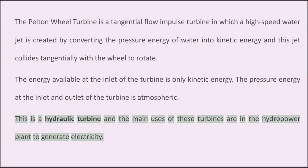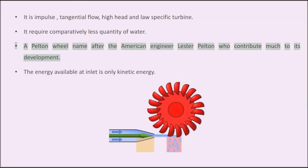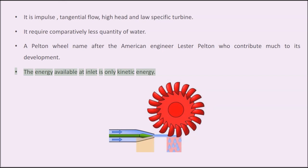This is a hydraulic turbine and the main uses of these turbines are in the hydropower plant to generate electricity. It is an impulse, tangential flow, high head, and low specific speed turbine. It requires comparatively less quantity of water. The Pelton wheel is named after the American engineer Lester Pelton, who contributed much to its development. The energy available at the inlet is only kinetic energy.